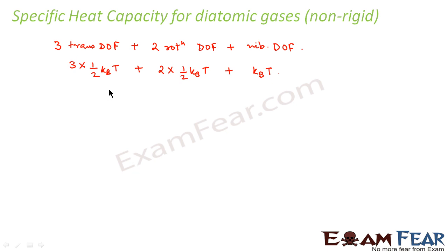So what would be the total energy? That is 5 by 2 kb into t plus kb into t. That is equal to 7 by 2 kb into t.